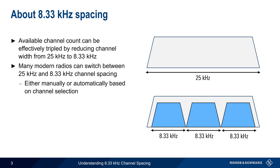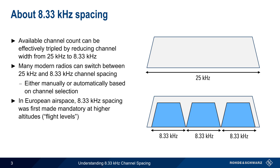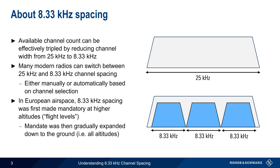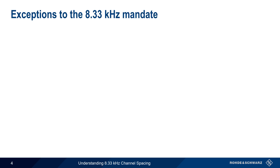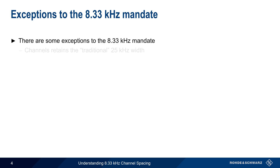As mentioned on the previous slide, this 8.33 kHz channel spacing is primarily used in Europe. It was first made mandatory at higher altitudes, or flight levels, but this mandate was gradually expanded all the way down to the ground and now applies to aircraft flying at any altitude within European airspace. Even within Europe, however, there are still some exceptions — channels which retain the traditional 25 kHz channel width.